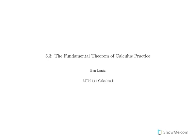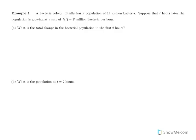In this video we're going to do some practice problems relating to the fundamental theorem of calculus. Our first example says a bacteria colony initially has a population of 14 million bacteria. Suppose that t hours later the population is growing at a rate of f'(t) equals 2 to the t million bacteria per hour. That is our derivative — that is the rate of change we have in this problem.